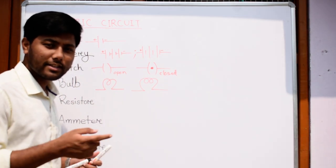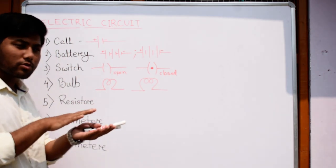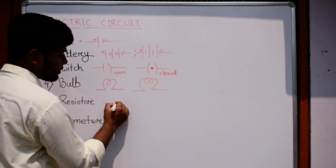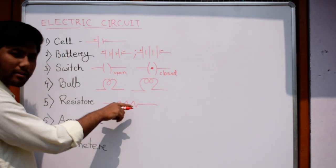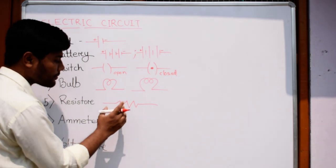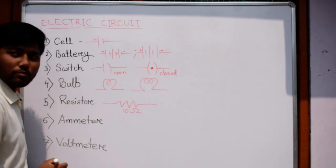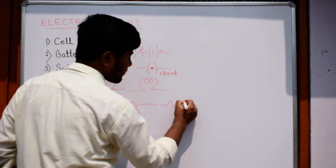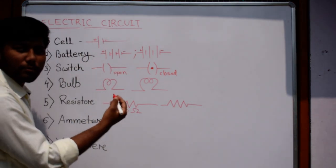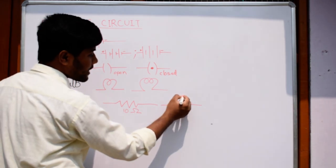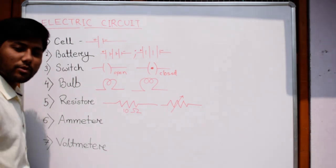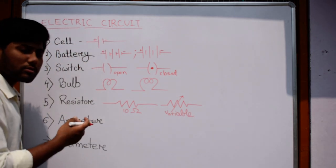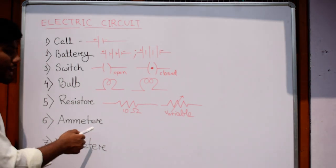Now resistor. In the last video we have discussed about resistor. That element we denote it by this symbol, a zigzag path. This is a constant resistor. For example, this resistor is 10 ohm. There is also variable resistance whose resistance value can be changed.